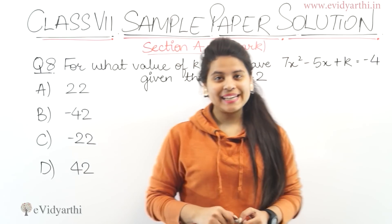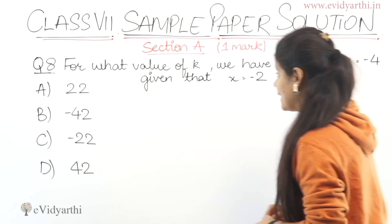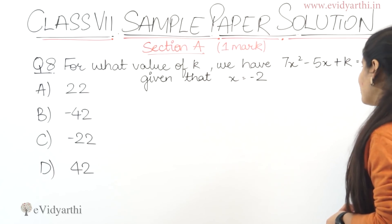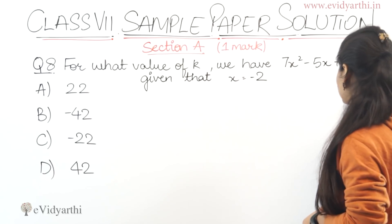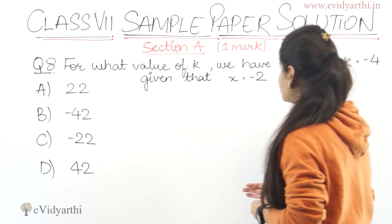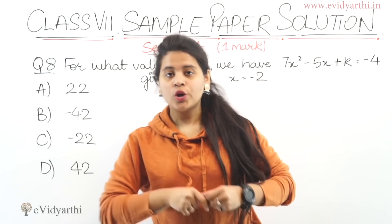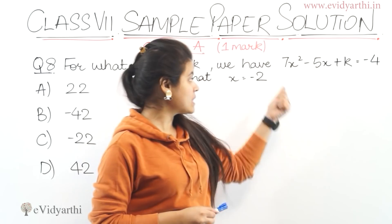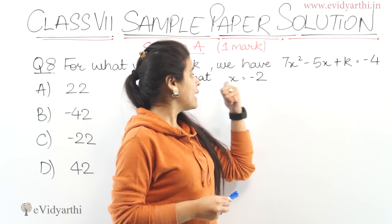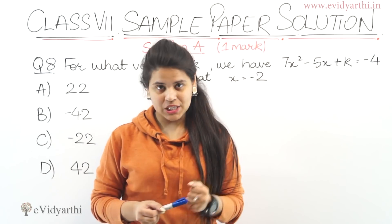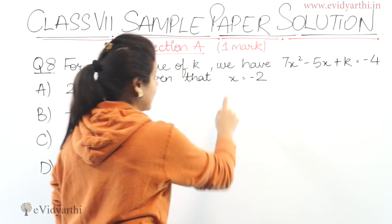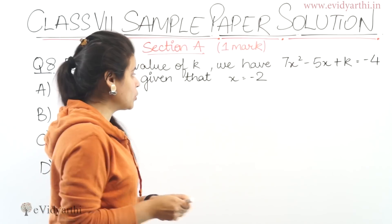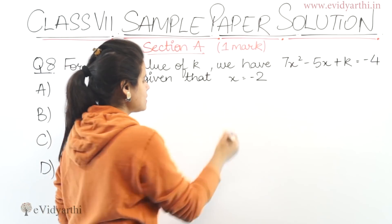Now coming to question number 8: for what value of k we have 7x squared minus 5x plus k equals to minus 4, given that x equals to minus 2. So first let's understand the question. We are asked what value of k satisfies this equation when x equals minus 2. Wherever we have x, we will put minus 2 in its place.